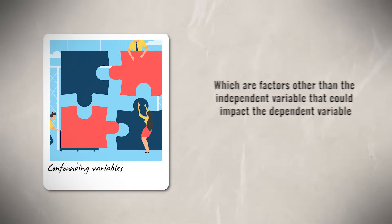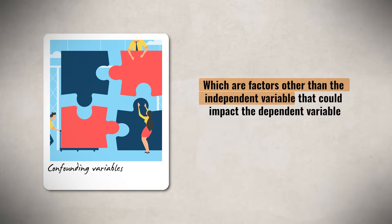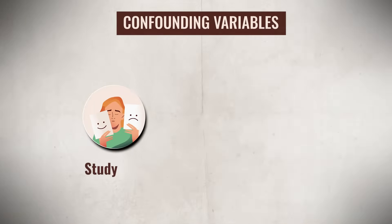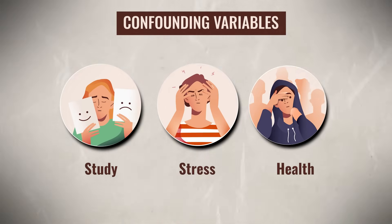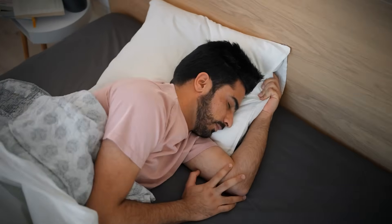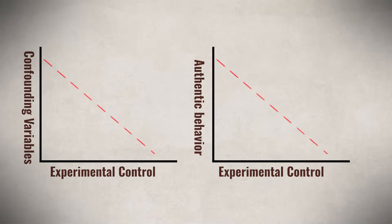Confounding variables are factors other than the independent variable that could impact the dependent variable — variables the researcher was not able to remove from the study. In the sleep study, potential confounding variables include study habits, stress, and overall health, all of which could impact exam performance regardless of sleep. The more control there is in a study, the fewer confounding variables there will be; however, overly controlling an experiment can create an inauthentic environment and introduce new confounding variables.